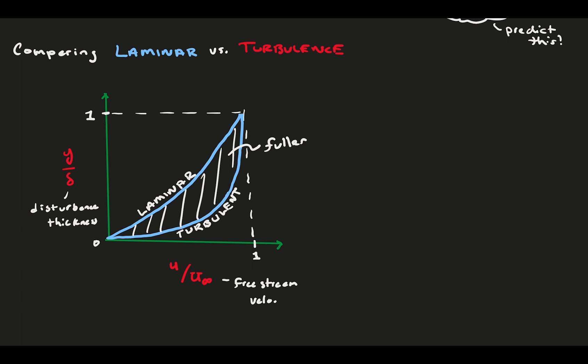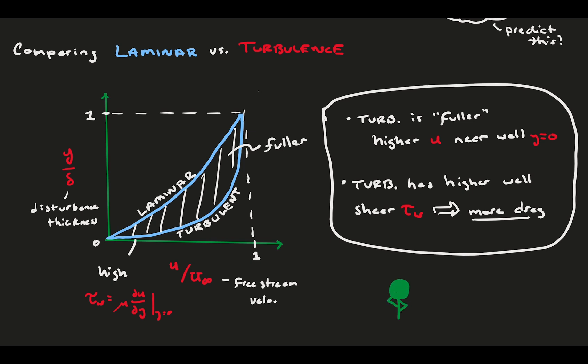First, the turbulent boundary layer is fuller than the laminar boundary layer. This means that near the wall, there is a much higher velocity in the turbulent boundary layer than its laminar counterpart. As a result, the turbulent boundary layer has higher shear stress at the wall, meaning it pulls on the wall section with a much higher force. This is because the slope of the velocity profile at the wall is much steeper. But why is this? Is there a physical reason behind these observations?